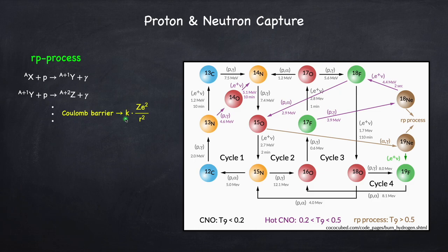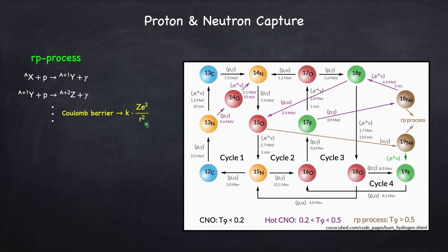Here k is the Coulomb constant, z is the charge of the seed nucleus, the charge of the proton is 1 in units of electron charge, and r is the separation distance between the two. This is actually a problem for the RP process, because the heavier the nucleus gets, the harder it is to pile on another proton. So it's difficult to get to very heavy nuclei via the RP process — you need very high temperatures. But that's not the only problem with the RP process.